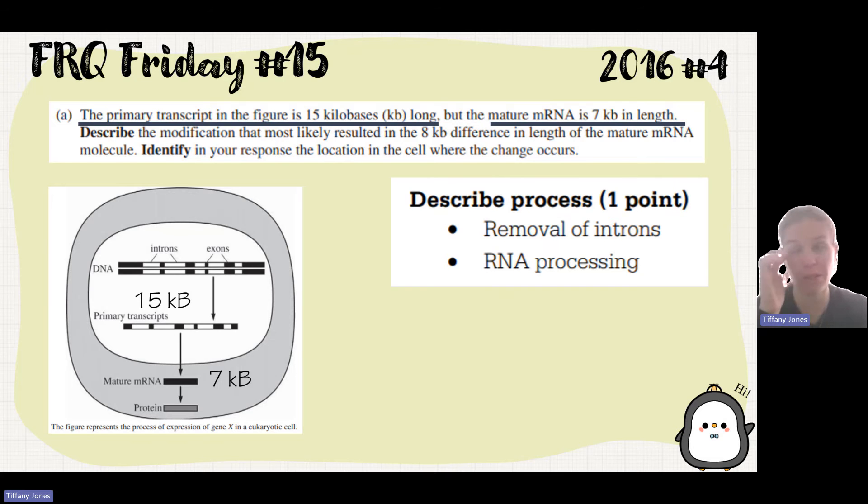Not in the diagram, but also just mentioning this since we're talking about this. Two other things that happen in RNA processing: there's a 5-prime cap added and a poly-A tail added.